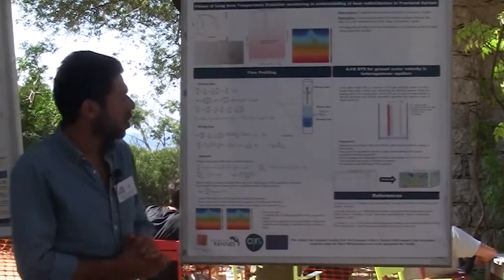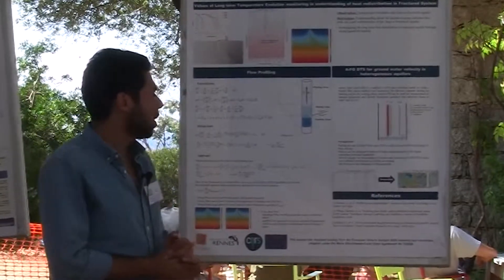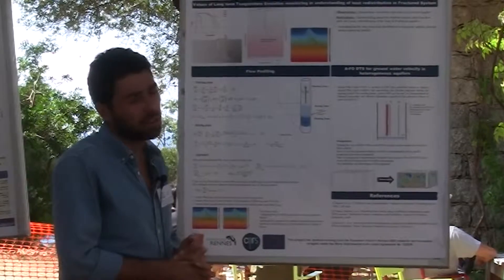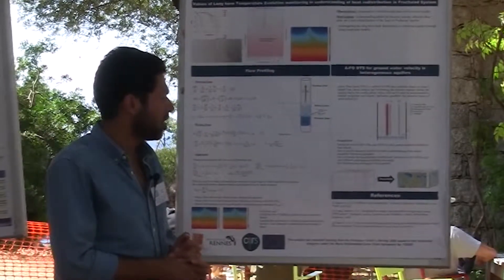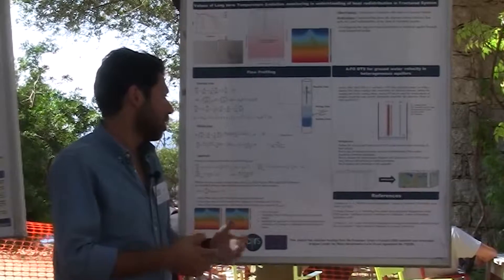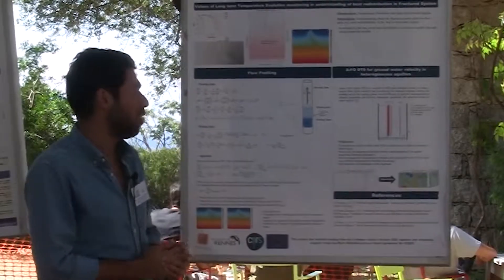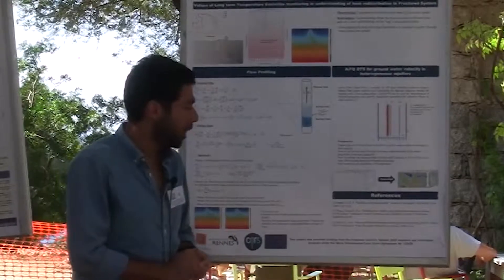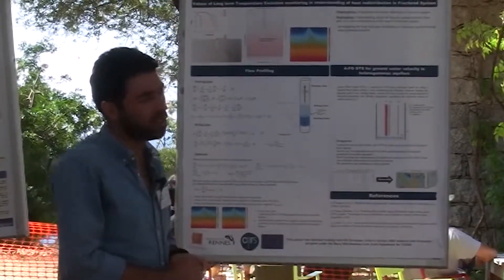And in the second part we are going to deploy the fiber optic DTS for calculating the groundwater velocity in the heterogeneous aquifers, and do some inversions of the velocities to find the heterogeneity and the properties of aquifers.